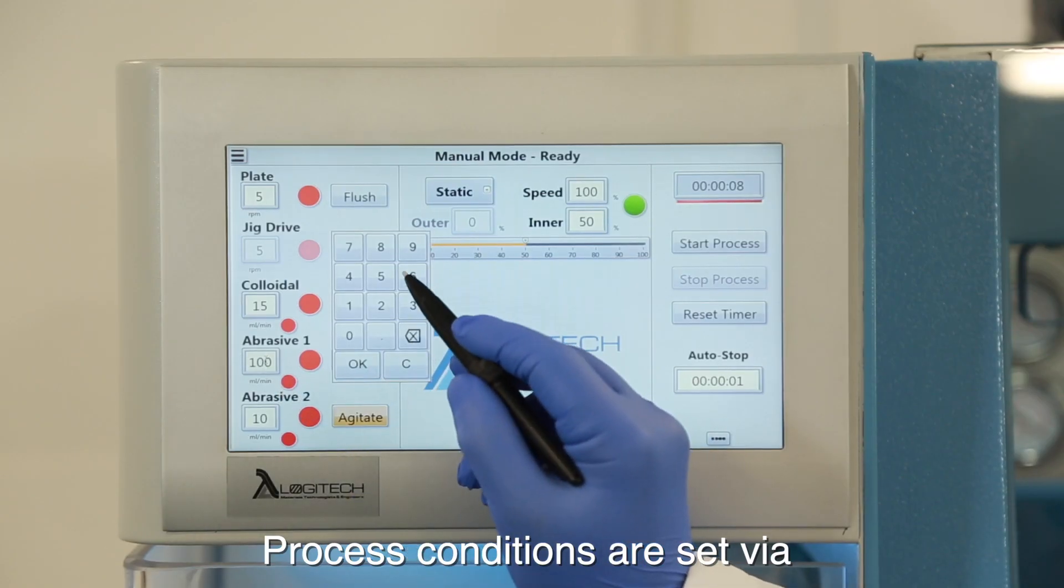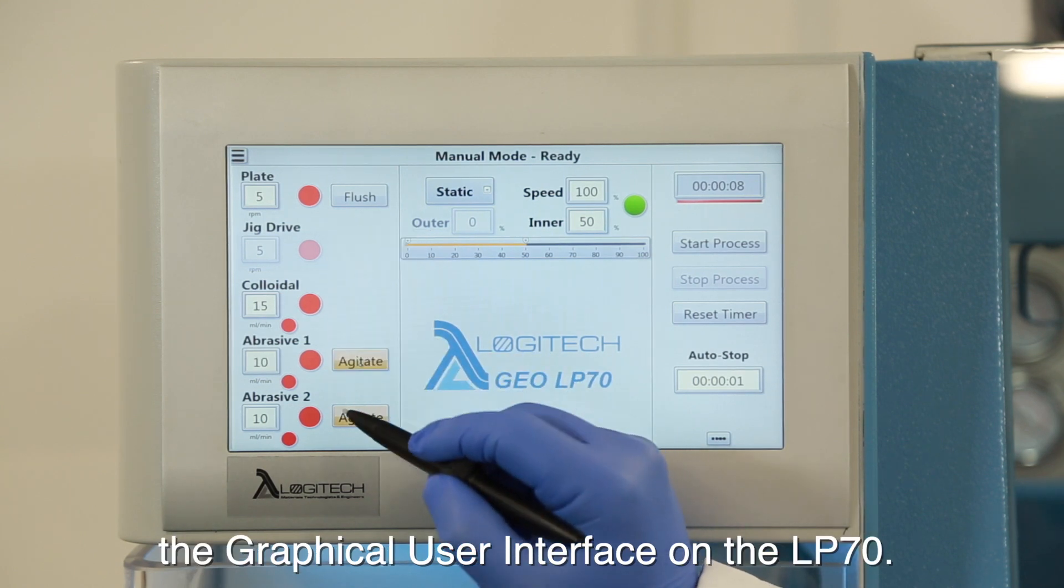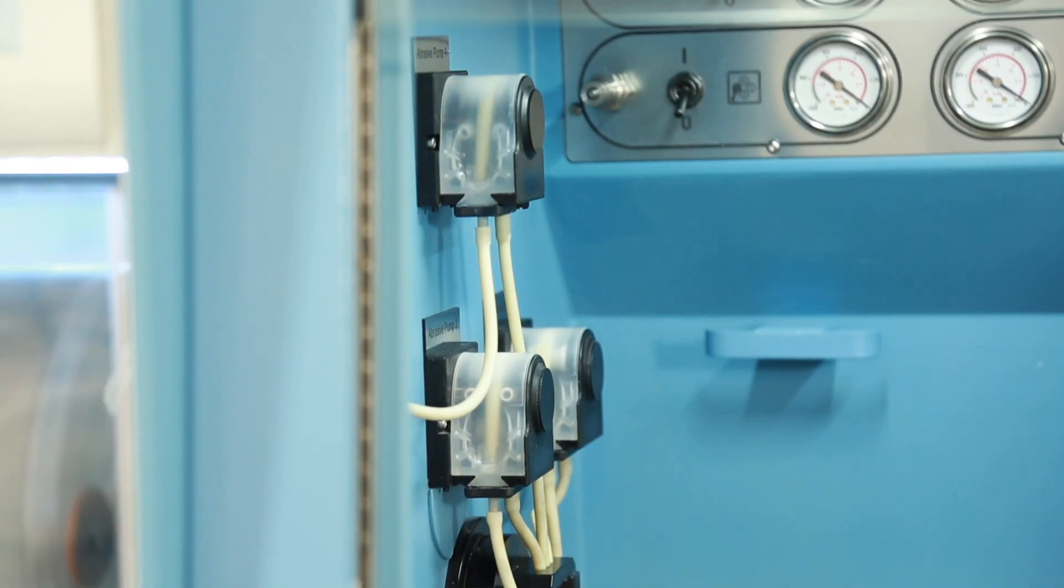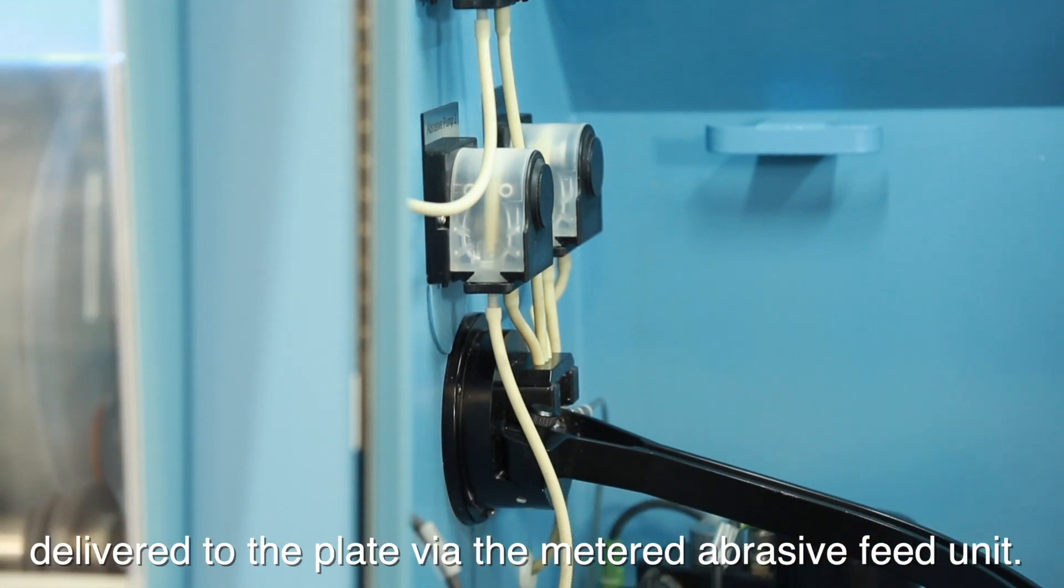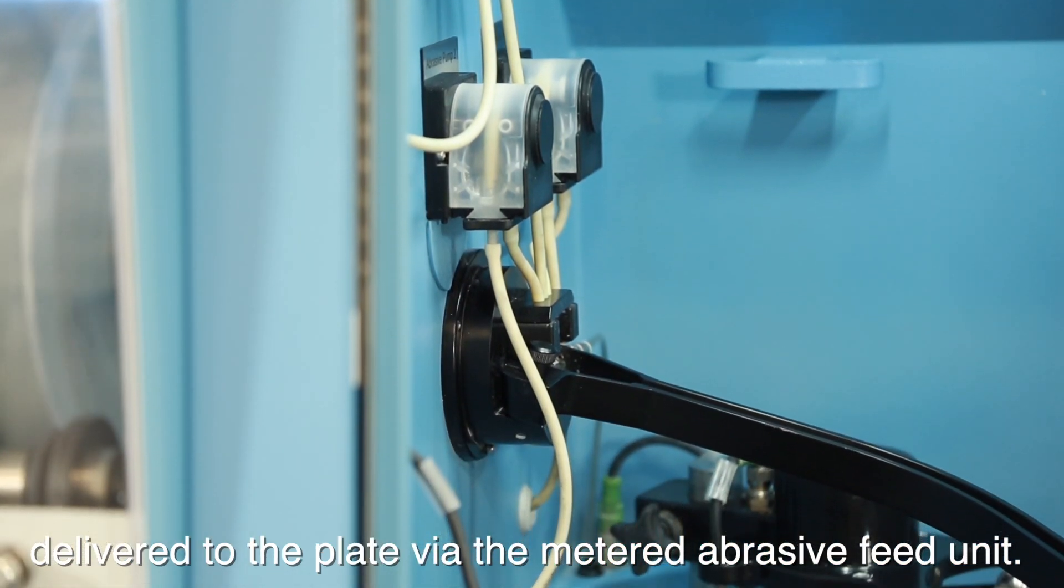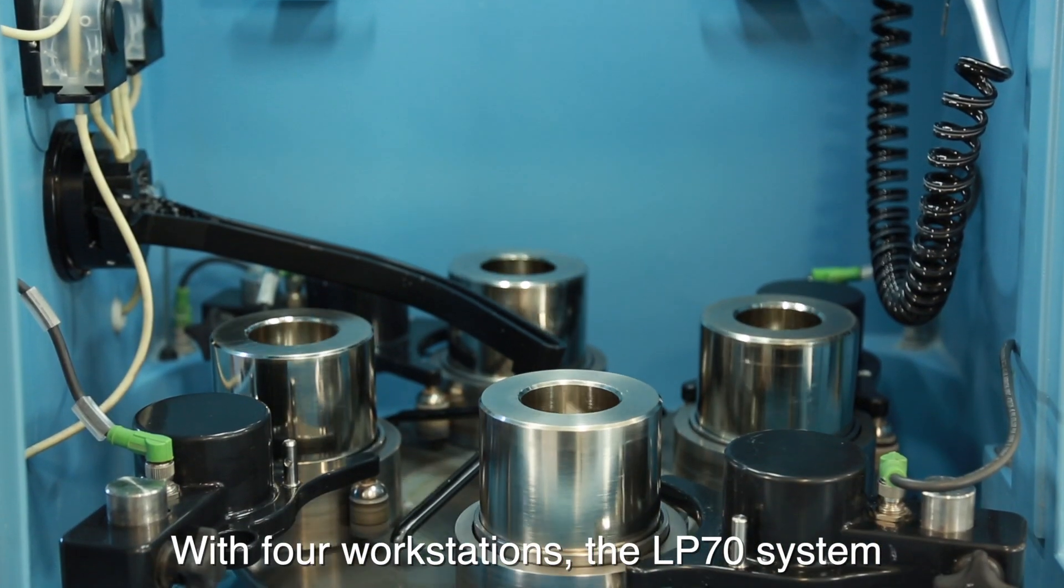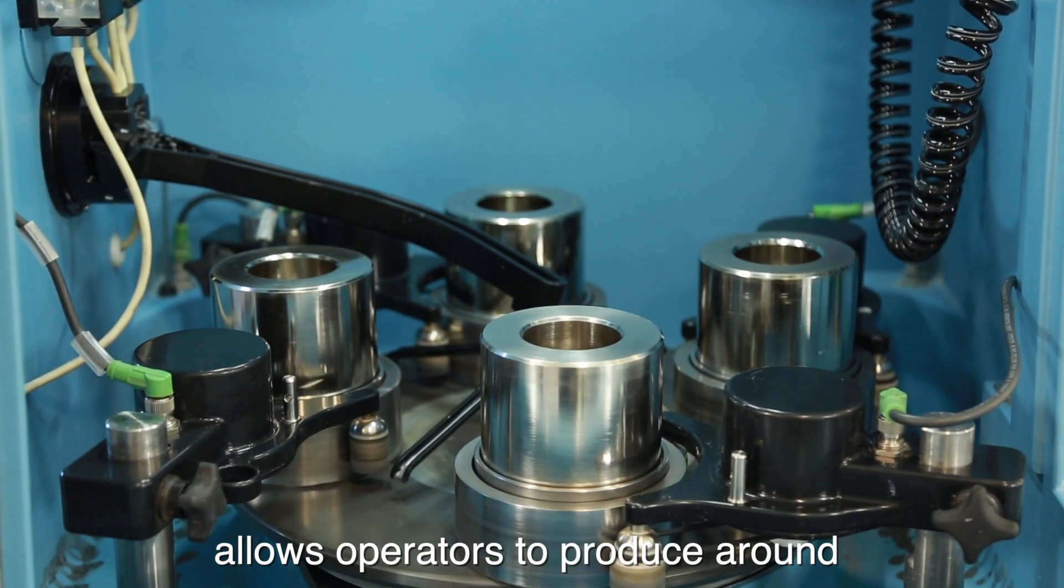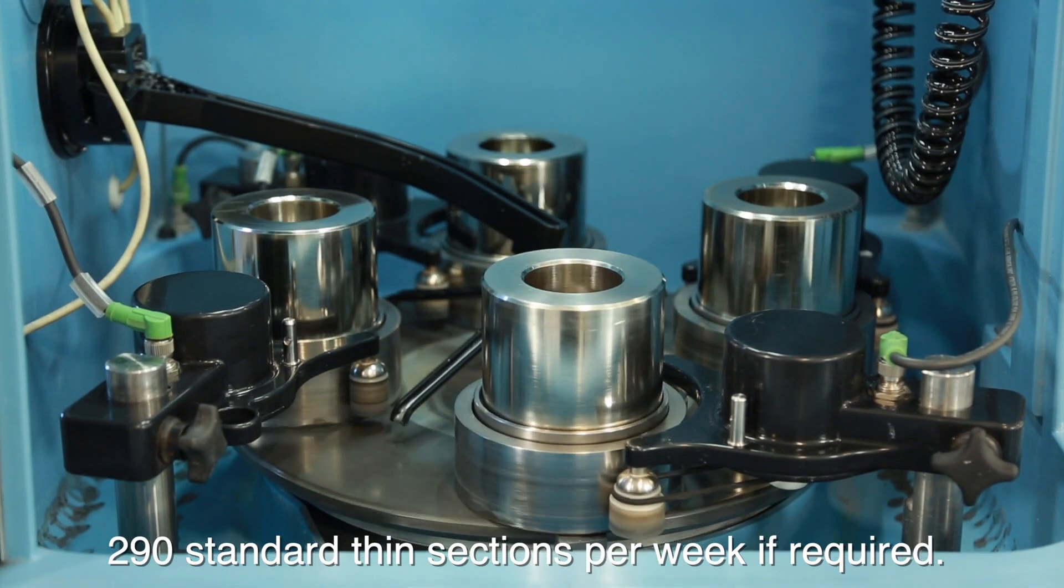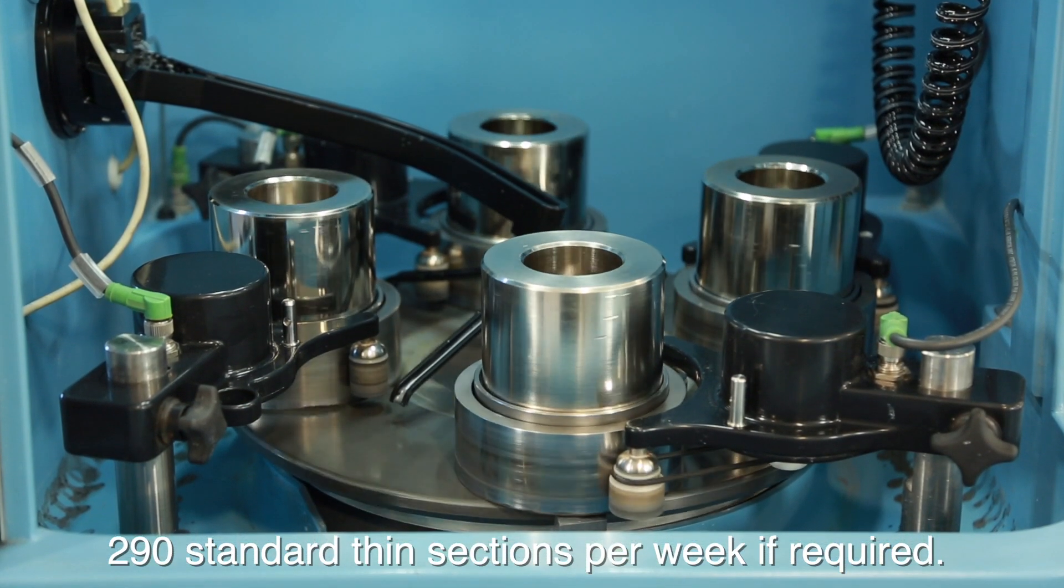Process conditions are set via the graphical user interface on the LP70. The user can easily control the amount of abrasive delivered to the plate via the metered abrasive feed unit. With four workstations, the LP70 system allows operators to produce around 290 standard thin sections per week if required.